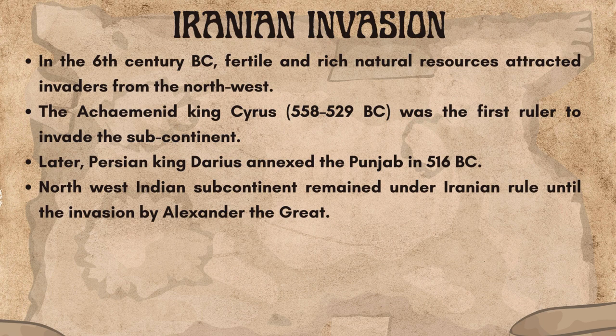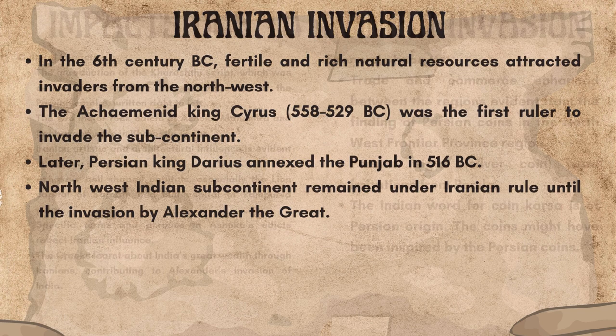In the 6th century BC, fertile land and rich natural resources attracted invaders from the northwest. The Achaemenid king Cyrus, 558–529 BC, was the first ruler to invade the subcontinent. Later, Persian king Darius annexed the Punjab in 516 BC. The northwest Indian subcontinent remained under Iranian rule until the invasion by Alexander the Great.